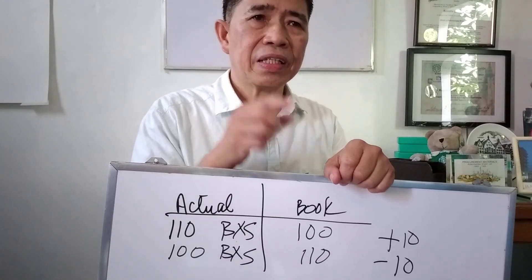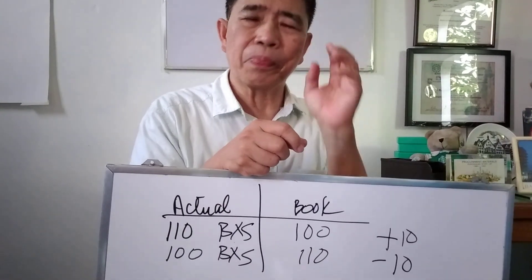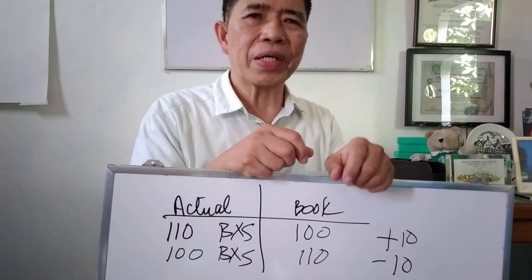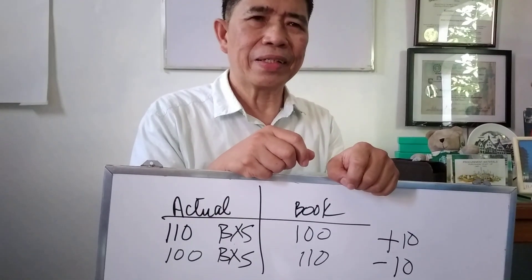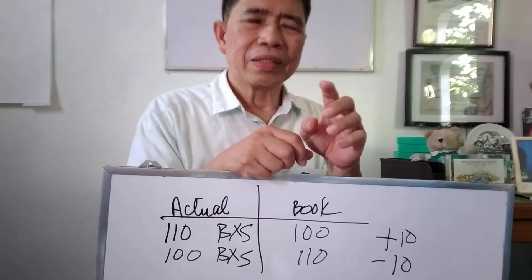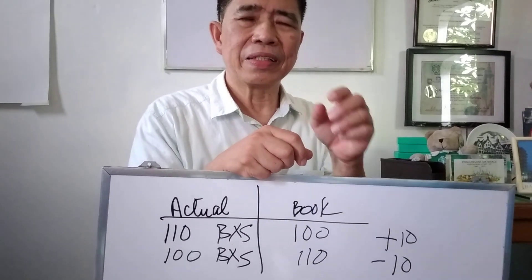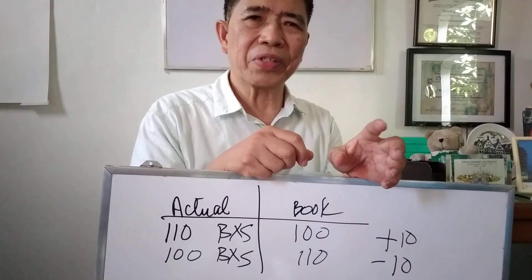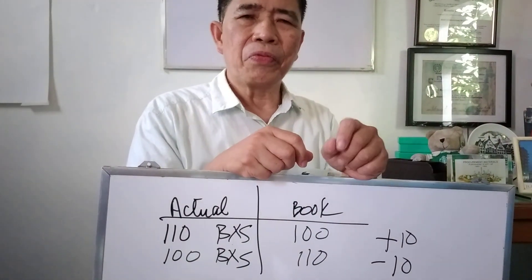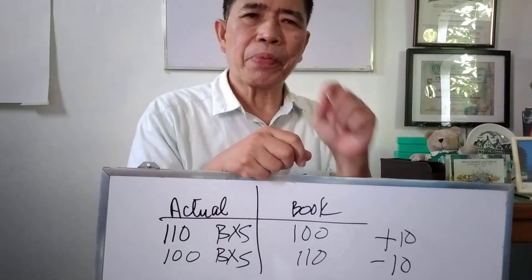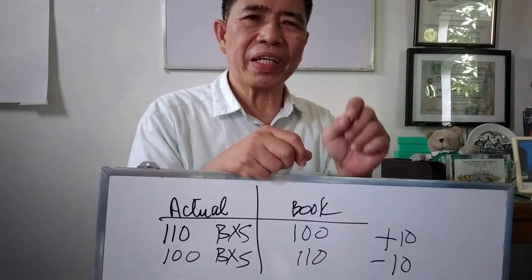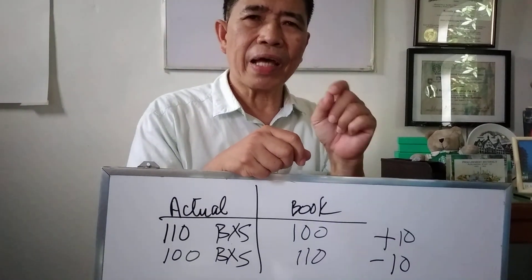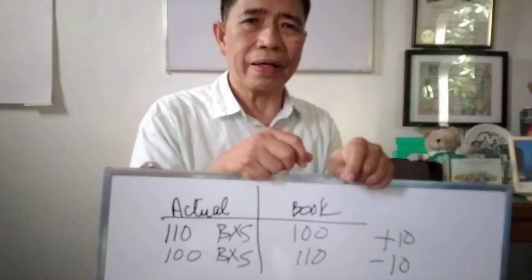Variances have three strategic, practical solutions as I have observed in the company where I work and with my clients who seek my advice. First, we should maintain proper stock arrangement — consolidating similar items in one location or one area.